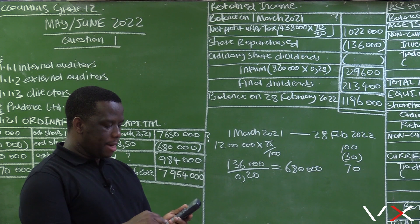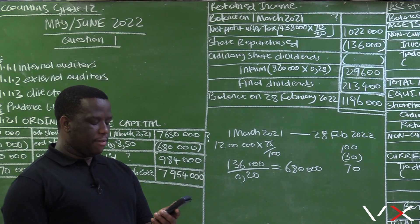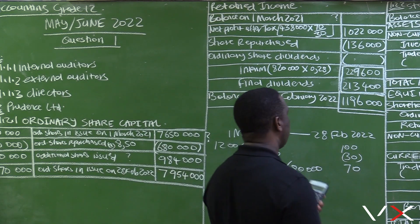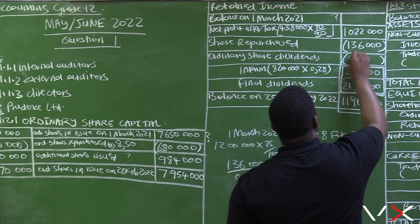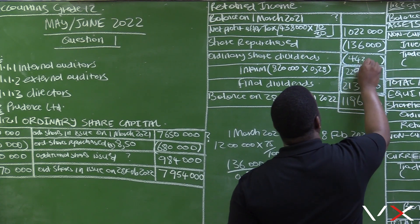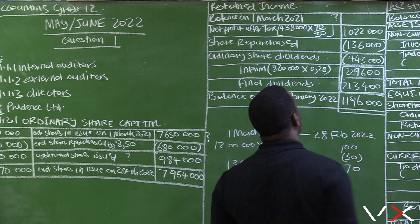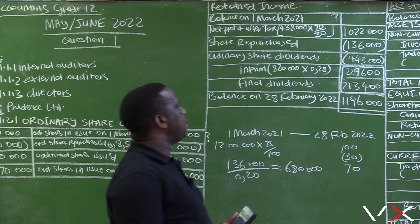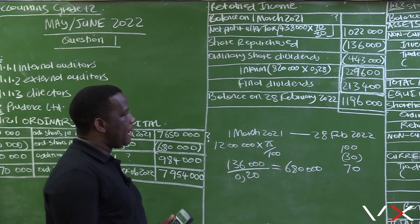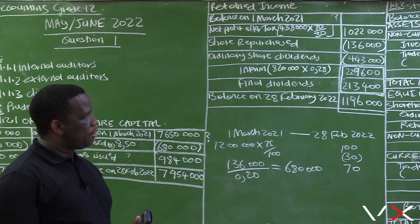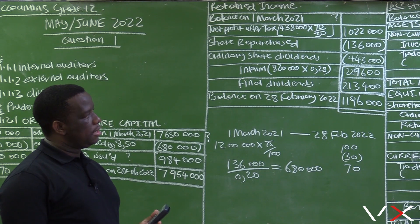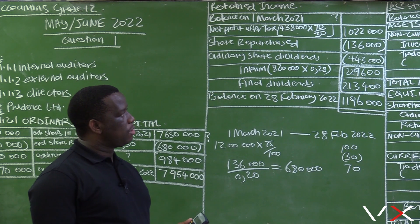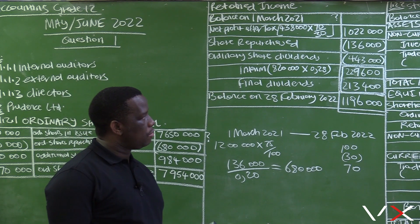So interim dividend of 229,600 plus final dividend of 213,400 gives us the total ordinary share dividend of 443,000. The dividend is made up of two ordinary dividends: 229,600 plus 213,400 equals 443,000.